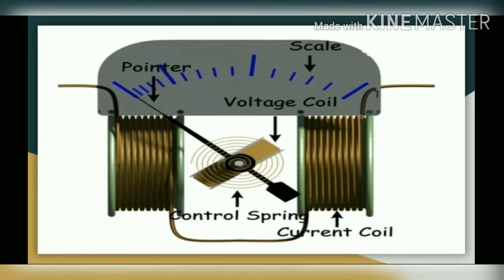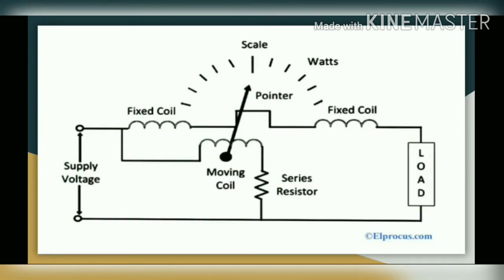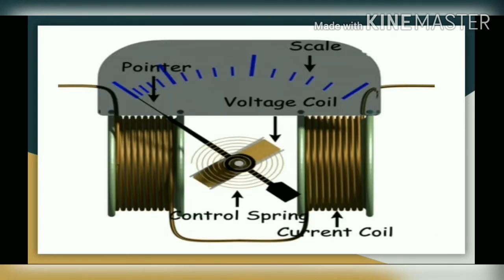This is the actual image of the wattmeter. You can see there are two fixed coils termed as current coils, and in the middle there is a moving coil named as the voltage coil. There is also a control spring for controlling purpose, along with a pointer and scale. In the diagram, you can similarly see the fixed coils and the moving coil or voltage coil in the center.